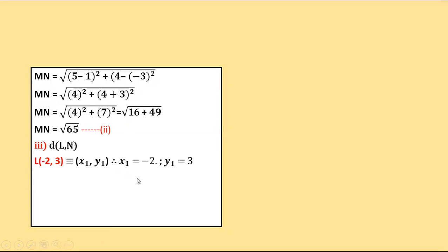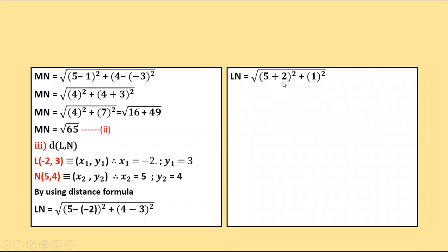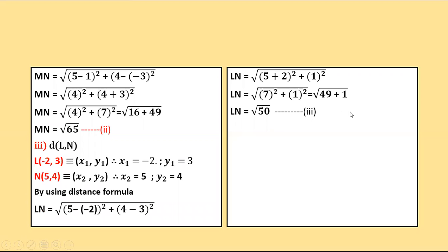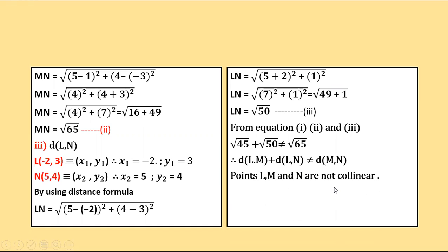From equations 1, 2, and 3, the largest distance is √65. But the sum of the remaining distances √45 + √50 is not equal to √65. Therefore, distance LM + distance LN ≠ distance MN. Hence, the points L, M, and N are not collinear.